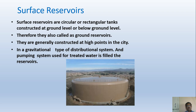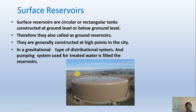The first type is the surface reservoir, which is constructed on the ground. Surface reservoirs are circular or rectangular tanks constructed at ground level or below ground level, also called ground reservoirs. They are generally constructed at high points of the city in a gravitational type of distribution system, and pumping is used to fill the reservoir with treated water.